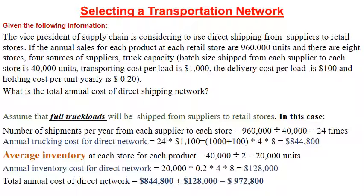Step 2: Annual trucking cost for direct shipping. Each of the 24 shipments costs $1,000 (transportation) plus $100 (delivery) = $1,100 per shipment. This is multiplied by 8 stores and 4 supplier sources, giving a total annual trucking cost of $844,800.